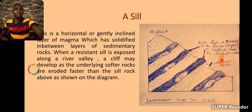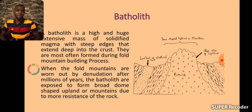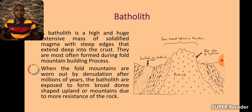Lastly, we will talk about batholiths. Batholiths are very huge, extensive masses of solidified magma with steep edges that extend deep into the crust. They are most often formed during fold mountain building processes, generally called orogenesis. When the fold mountains are worn out by erosion after millions of years, the batholiths are exposed to form a broad, dome-shaped upland or mountains, similar to fold mountains due to the resistant nature of the rock.